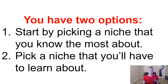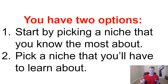You have two options. One, you can start by picking a niche that you know the most about. Or two, you can pick a niche that you'll have to learn about. Ideally, when you pick a niche, you want to pick the one that you know about, because it's going to be easier to figure out what you want to target and how to create a marketing strategy around it. For instance, I know for people who want to get SEO audits, they are looking for a very specific type of content, and the reason I know that is because I know the niche well.